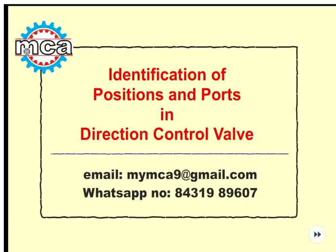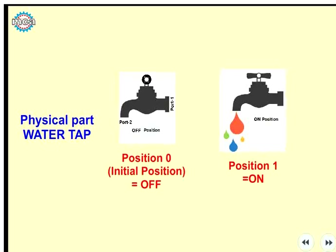In a direction control valve, we can identify the positions and ports. It is very simple and easy to use. We can use it as simply as a daily example. It is very simple to use this symbol, and we can use this position.